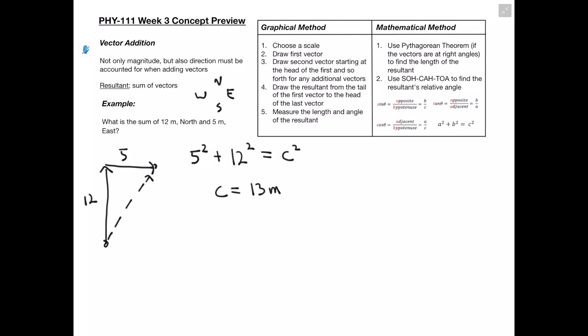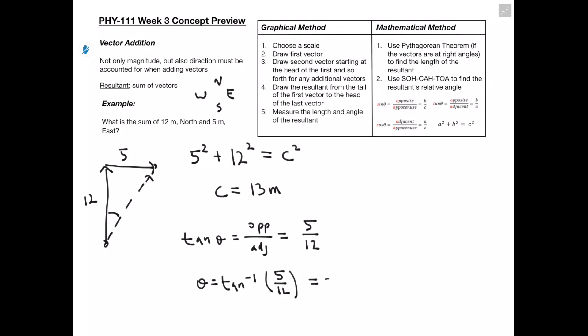Now we need our direction as well to give the full answer. We're going to find this angle using SOH-CAH-TOA. We have both an opposite and an adjacent side relative to the angle, so we use tangent: tan(θ) = opposite/adjacent = 5/12. Solving for θ, we get θ = arctan(5/12), which gives us about 23 degrees. Now we have both our magnitude and our direction.